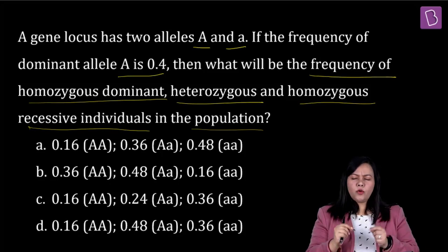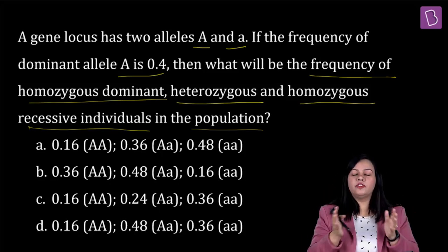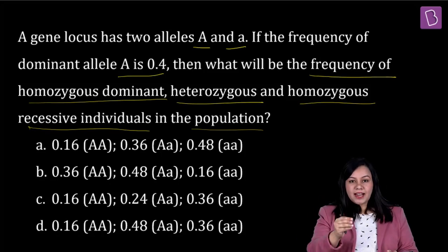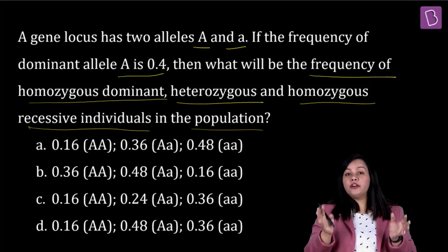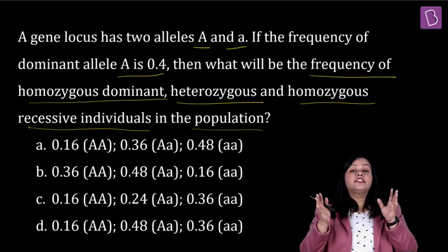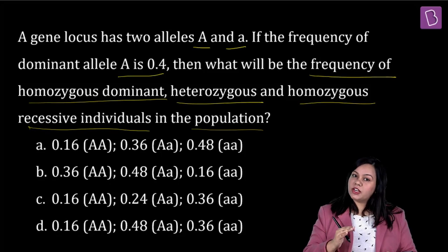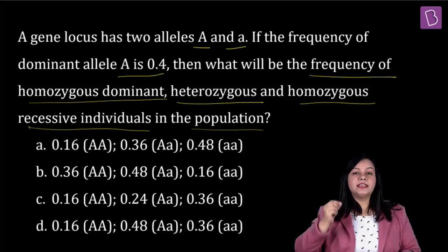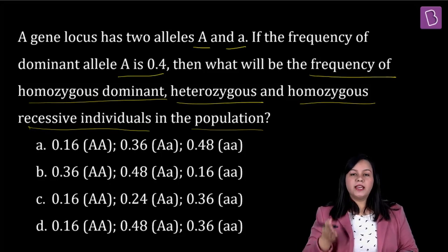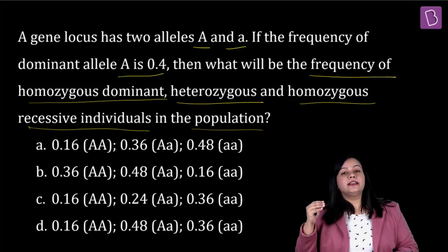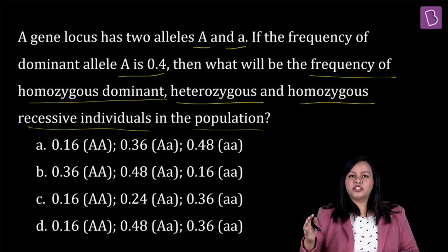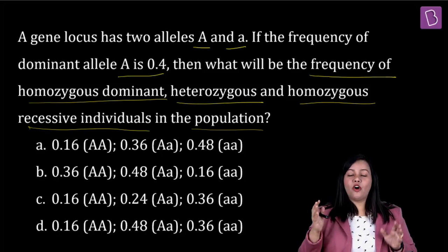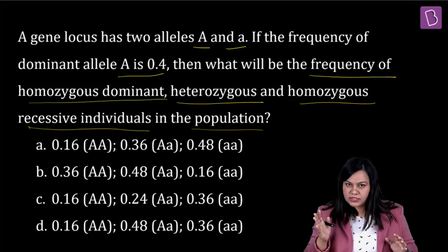Hardy-Weinberg's equilibrium states that the allele frequency and the genotype frequency of a given population is going to remain constant from one generation to the next generation. The key factor here is that there should not be any disturbing factors. In the absence of mutation, recombination, and other such factors, the allele and genotype frequency of a given population remains constant from generation to generation.